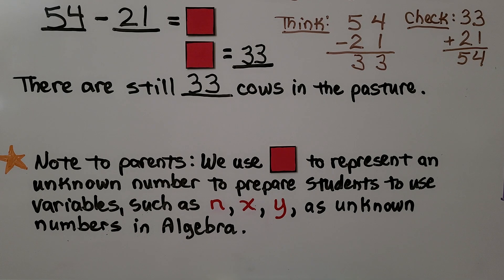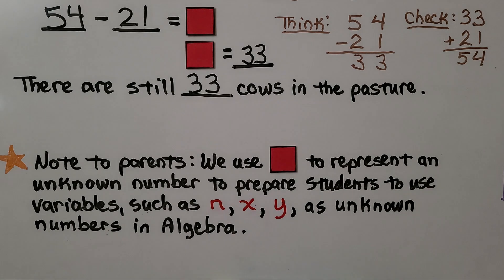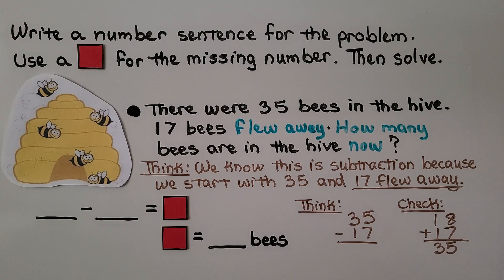A note to parents: we use this box to represent an unknown number to prepare students to use variables such as n, x, or y as unknown numbers in algebra. In third grade math, we use n to represent an unknown amount. The problem is telling us to write a number sentence and use a box for the missing number, then solve.